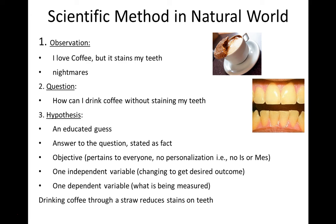You always have one of each of those variables and you don't want to have multiple variables. For example, I don't want to say 'drinking coffee through a straw and using whitener will reduce stains on teeth' — that has two variables. I wouldn't know if it's the straw or the whitener reducing the stains. So you have to make sure you have one variable at a time that you're testing, so you clearly know what is affecting your outcome.